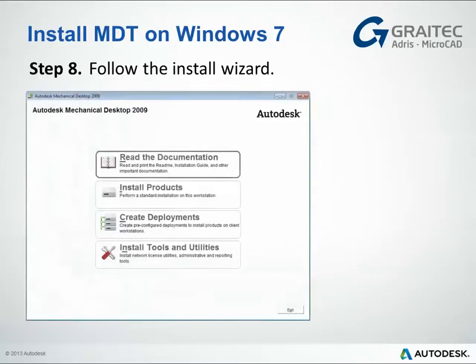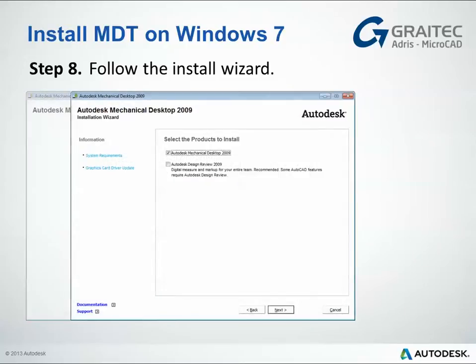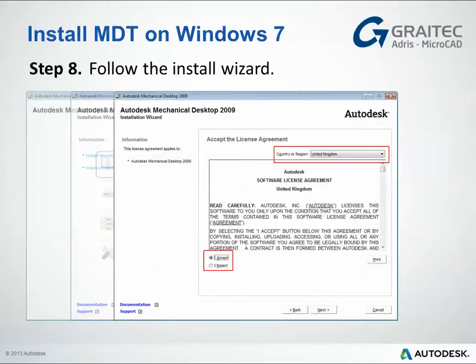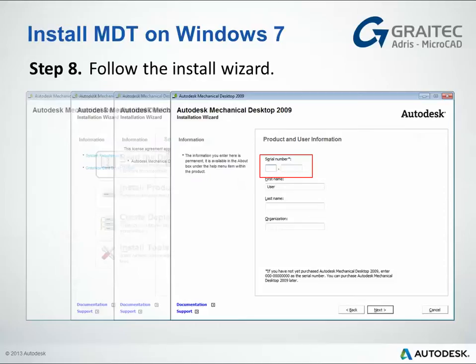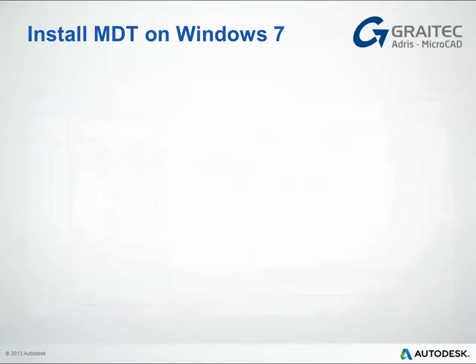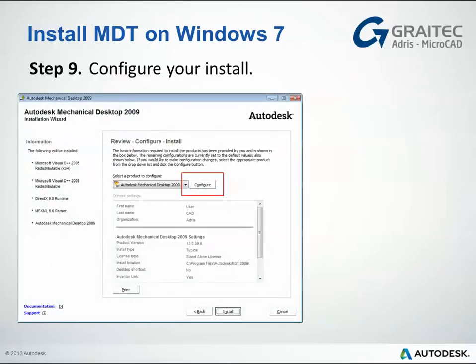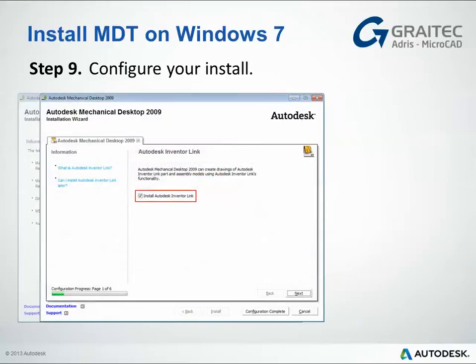Step 8: follow the install wizard — select Install Products. Make sure that you're picking the right products; in this case you only really want Mechanical Desktop. Define it as the correct country and accept the conditions. Enter your serial number, which will either be from your qualifying product or one that you've requested from us. Then go to the configuration phase. On the next screen, you can pick the Inventor link, which is important if you want to translate data from Mechanical Desktop to Inventor from 2009.